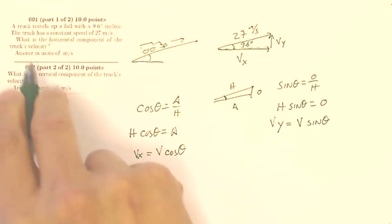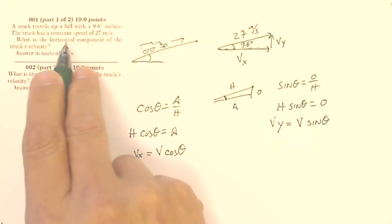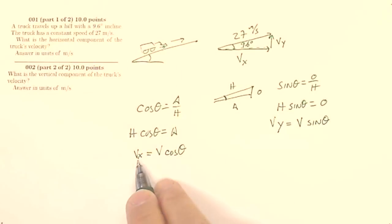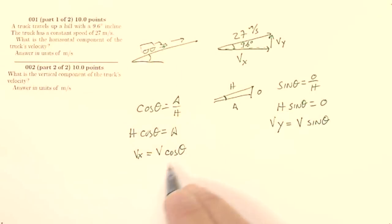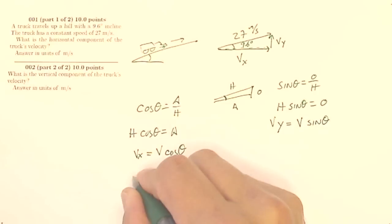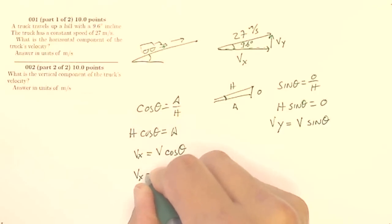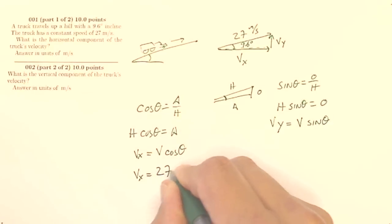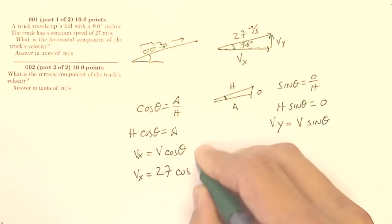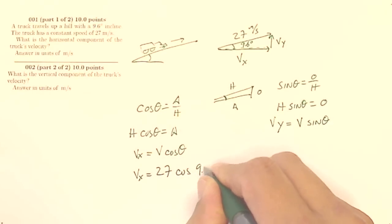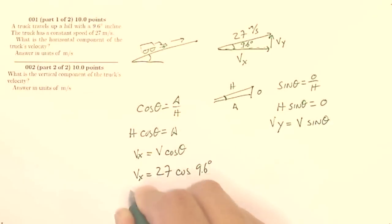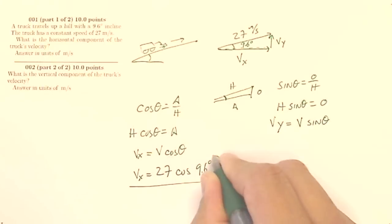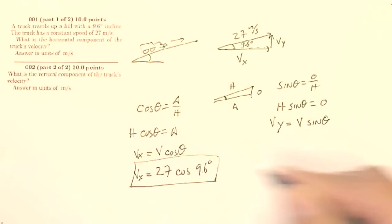My first question says: what is the horizontal component of the truck's velocity? I want the horizontal component, the x component, so that's going to be my velocity times cosine theta. My horizontal component of the velocity is going to be 27 times the cosine of 9.6 degrees. And there is my horizontal velocity.